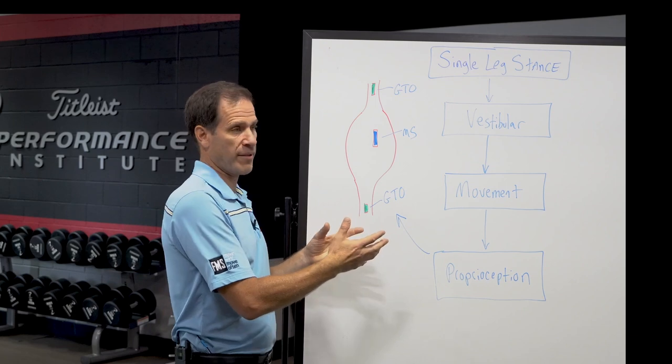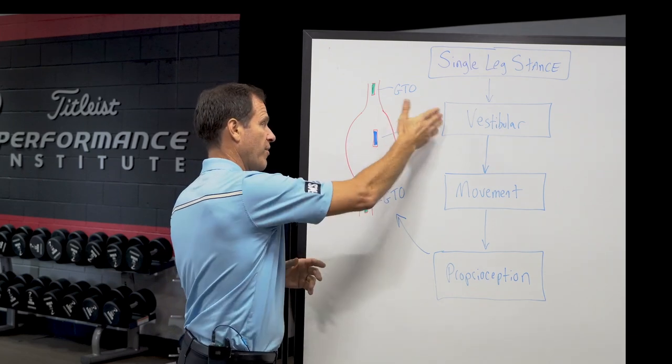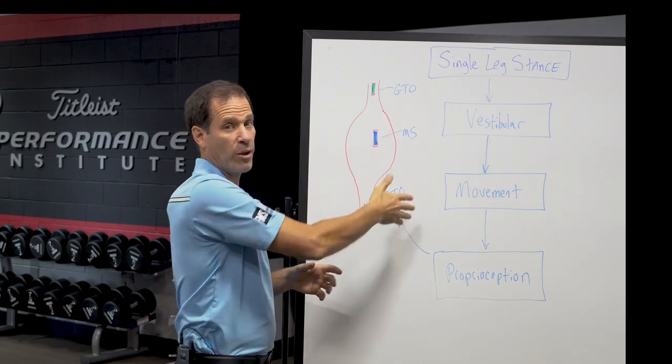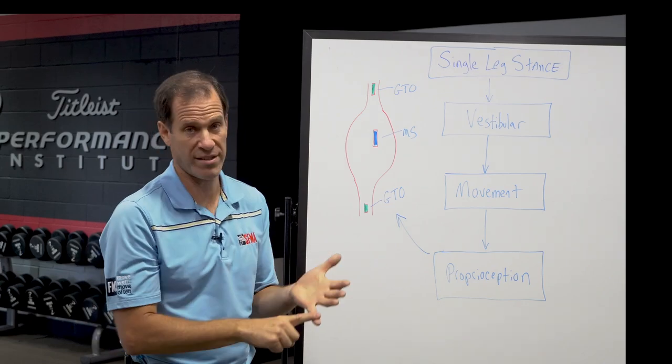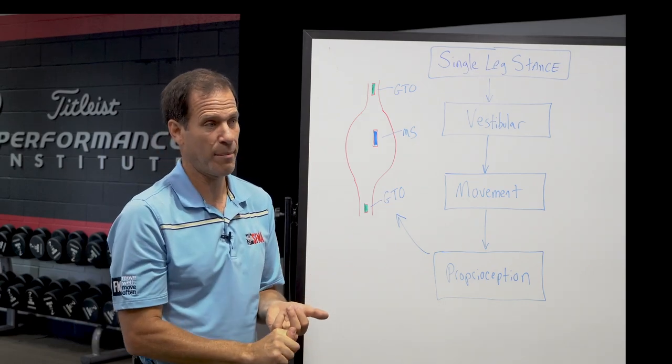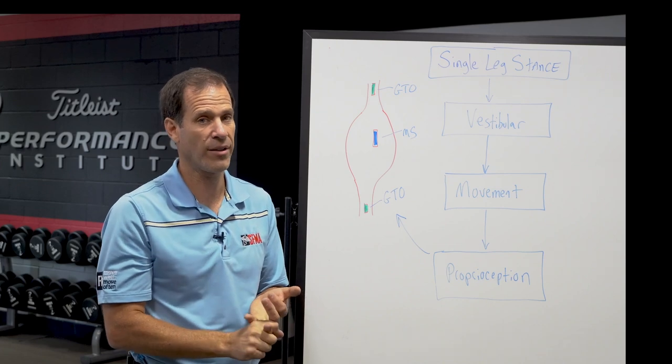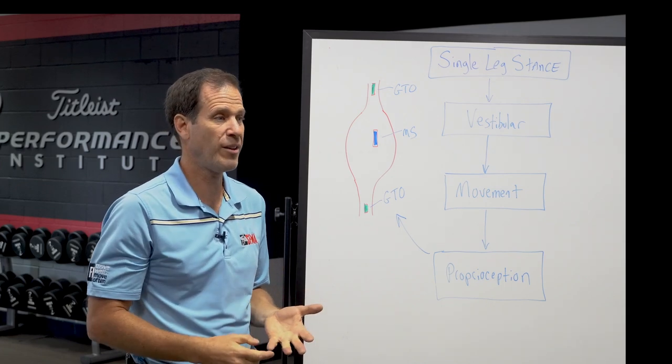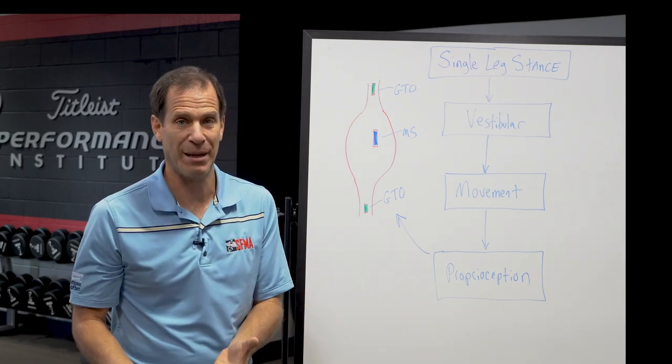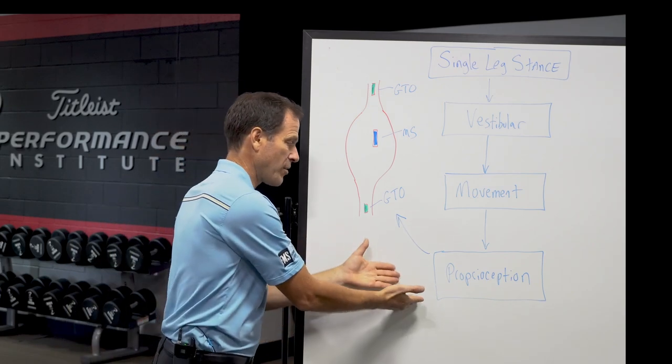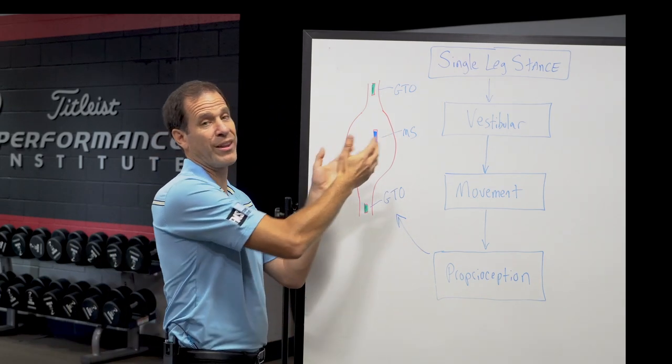Now, the cool thing about the SFMA single leg stance breakout is if we check vestibular, and your vestibular is good, then we go check movement. If movement's clear, well, you just rolled out vestibular. You just rolled out that the proprioceptors aren't getting stimulated. They are. The joints are moving. So really, you've rolled everything out except proprioception. So our final diagnosis would be proprioception if we ruled everything else out.